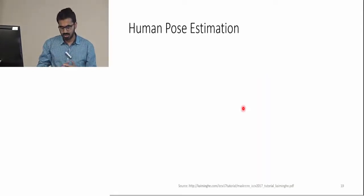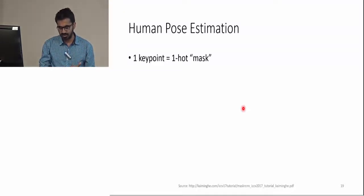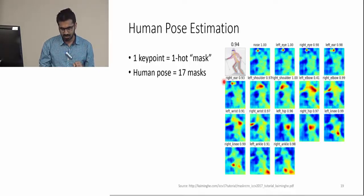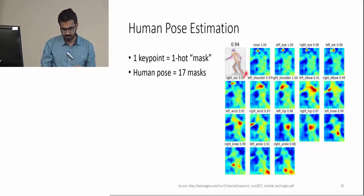Before discussing the experiments, I want to discuss human pose estimation and how they have formulated this problem. Each keypoint in human pose is treated as a different class. For human pose, we have 17 keypoints, so we have 17 different masks.